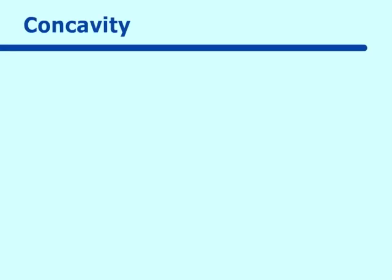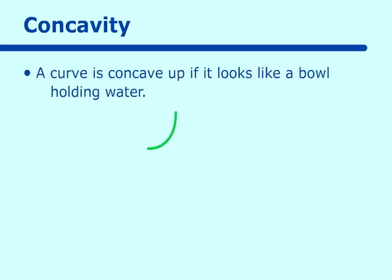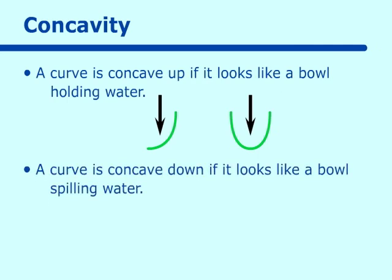Let's go on to concavity. A curve is concave up if it looks like a bowl holding water — it could be completely concave up or slightly concave up, but as long as it's holding water in some way, we think of it as concave up. A curve is concave down if it looks like a bowl spilling water. As we get on with derivatives, we will have a more precise definition of concavity, but right now we are just looking for curves that look concave up or concave down.